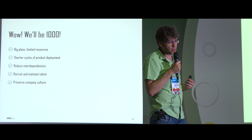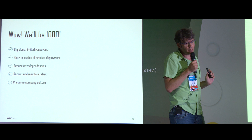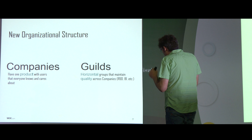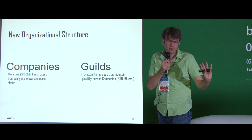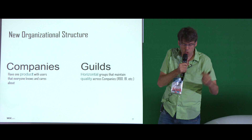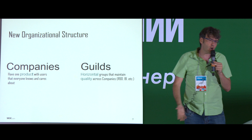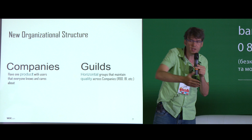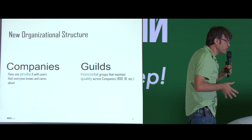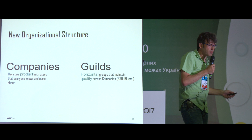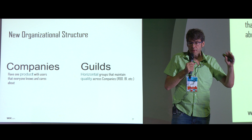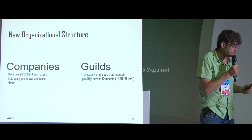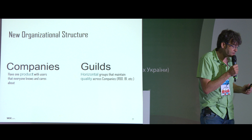When we knew we were going to cross the 1,000-person barrier, we decided to take this model and make it work for the entire company. We call it the model of companies and guilds. We broke the company into 28 different companies — not financially or legally, but from an essence perspective. Every company is oriented around a product: there's a company that does the editor, one for Wix Hotels, one for Stores, one for Bookings, and so on. Every company has all the resources they need — their own engineers, product managers, designers, and BI analysts. They have a CEO who manages the company. The largest company in Wix has 100 people; the smallest has three.